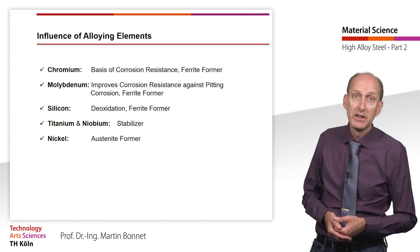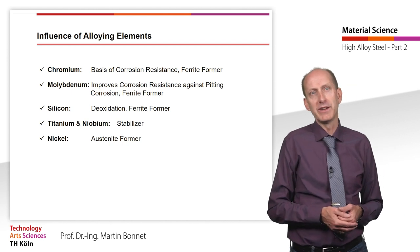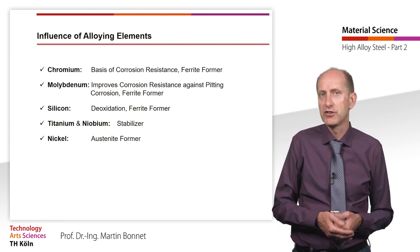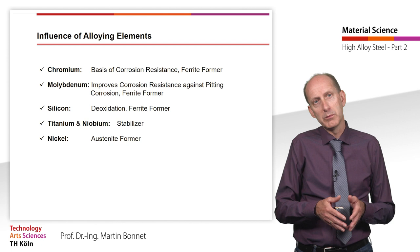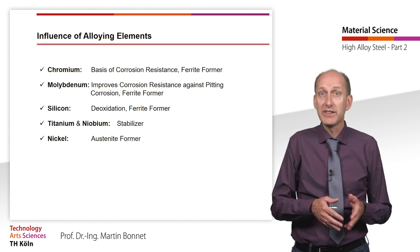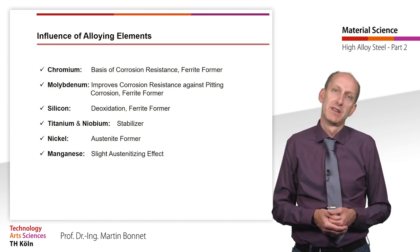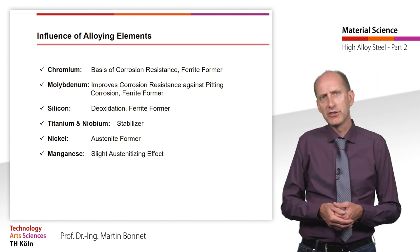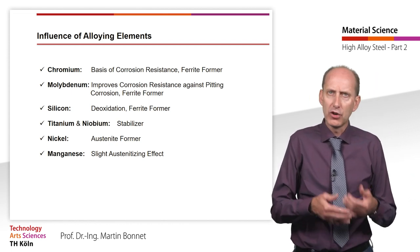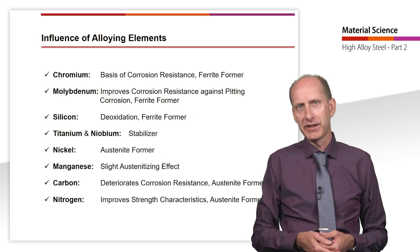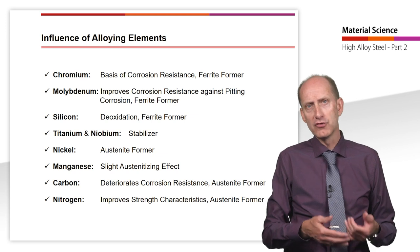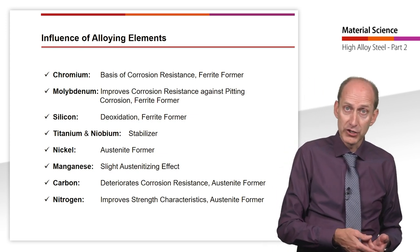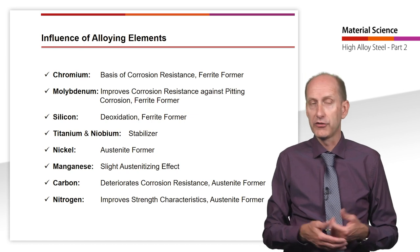Nickel, along with chromium, is the most important alloying element in austenitic steel and has strong austenite-forming properties. By adding about 8% nickel, steel with 18 mass percent chromium is austenitic even at room temperature. Manganese has a slight austenite effect up to contents of 2% by mass. Carbon and nitrogen are strong austenite formers. Carbon, however, greatly deteriorates the corrosion resistance of steel, whereas nitrogen improves the strength characteristics of austenitic steel.